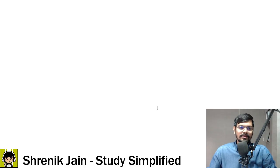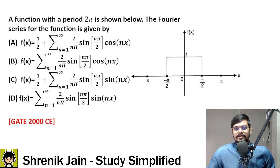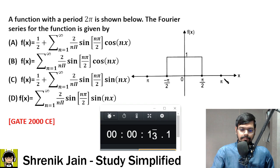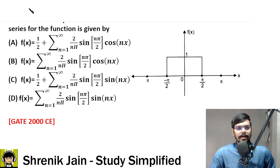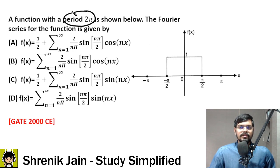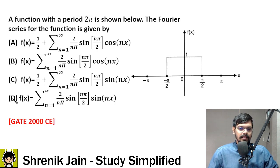Let us start with the very first question on your screen. Gate 2000, civil engineering. Tell me guys, what is the answer? I will give you exactly two minutes — your time starts now. We have a graph with x-axis and y-axis, where y is a function of x. This is a rectangular shape pulse, and the graph is working from minus pi to positive pi. The periodicity of the graph is 2 pi. Can you find the Fourier series of the function? So tell me guys, what is the answer — A, B, C, or D?